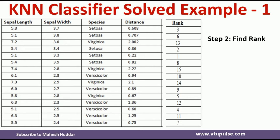Once the ranking is done, given the value of k — for example, if k = 1 — we need to identify the first ranked example. The first ranked example in this case is this one. Since the species of this first ranked example is setosa, we can say that the new example belongs to the setosa species when k = 1.